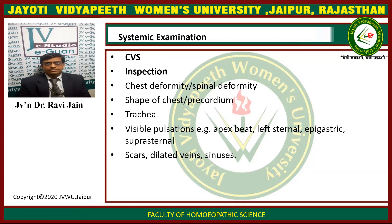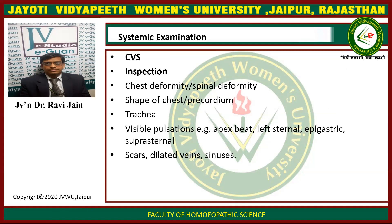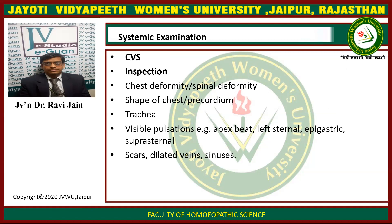In the cardiovascular system, we have to do the inspection. Look for any kind of chest deformity or spinal deformity. Check for the shape of the chest, the pre-cordium, and any kind of visible pulsations, e.g. apical, left sternal, or epigastric and suprasternal.